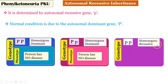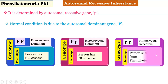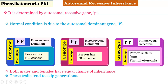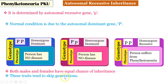In the third possibility, homozygous recessive, both genes are recessive, so the recessive gene finds expression and the person will suffer from phenylketonuria. Both males and females have equal chance of inheritance and these traits tend to skip generations. This is because in the heterozygous dominant condition, the person will not suffer from the disease but will be a carrier. In that generation the disease will not be seen, but in the next generation it will appear again, which is why these traits tend to skip generations.